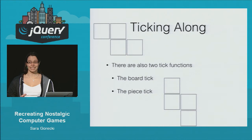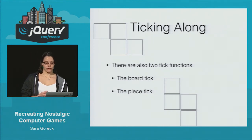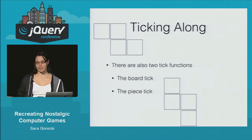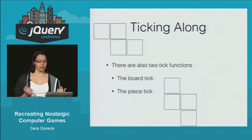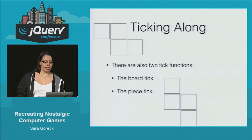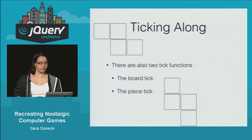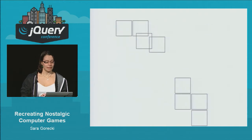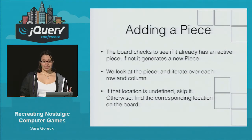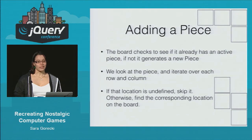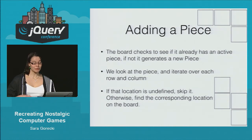There are two different ticks: the board tick and the piece tick. The board tick handles adding new pieces to the board when there are no active pieces, telling the active piece that it's time for the piece tick as well, removing complete rows, and rendering the board. The piece tick is responsible for taking user input and moving the piece appropriately, rotating the piece, and adding and removing it from the board at specified locations.